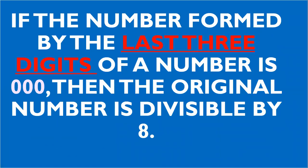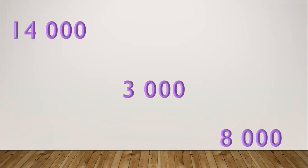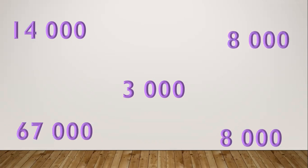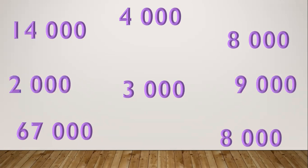Also, if the number formed by the last three digits of a number is three zeros, then the original number is divisible by 8. Examples of numbers ending with three zeros: 3,000; 14,000; 8,000; 67,000; 4,000; 9,000; 2,000; and so on. That's all. Thank you for watching, and don't forget to subscribe and hit the notification bell for new updates of our videos.